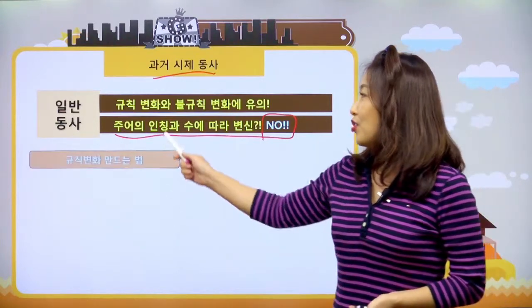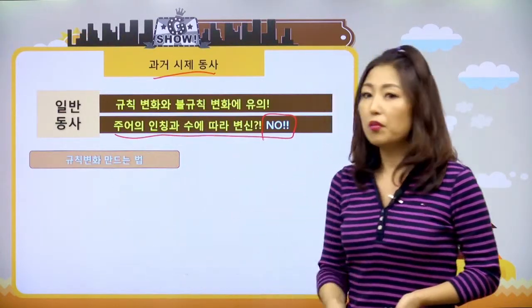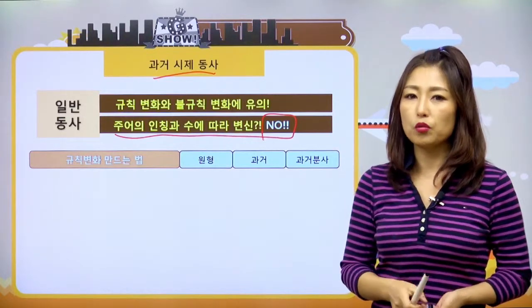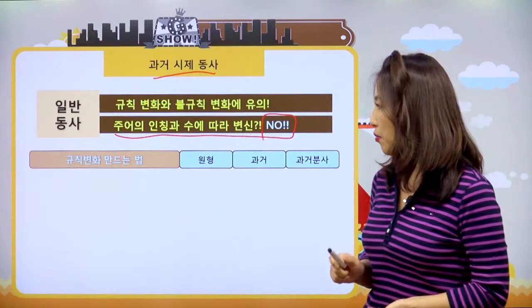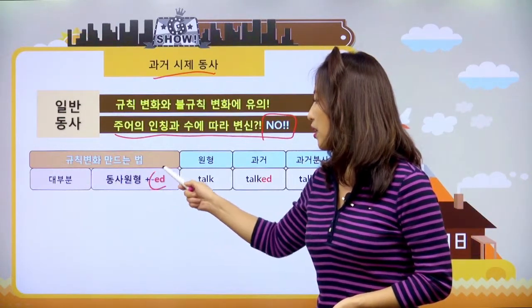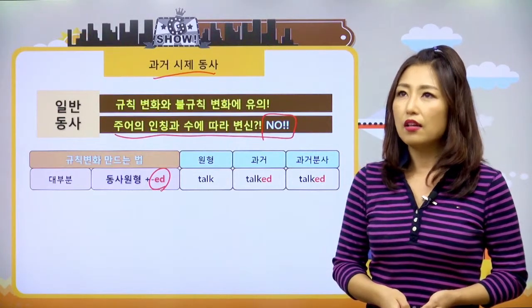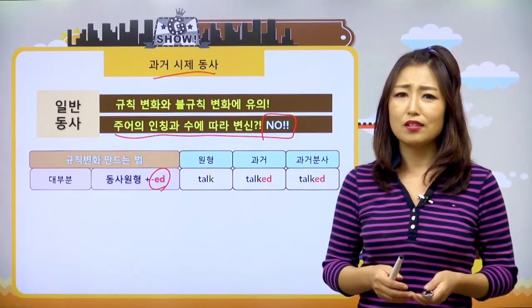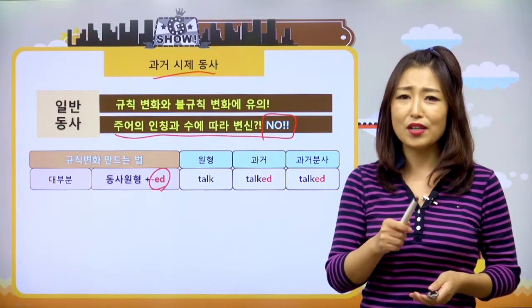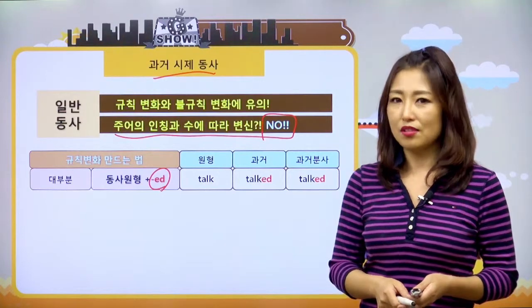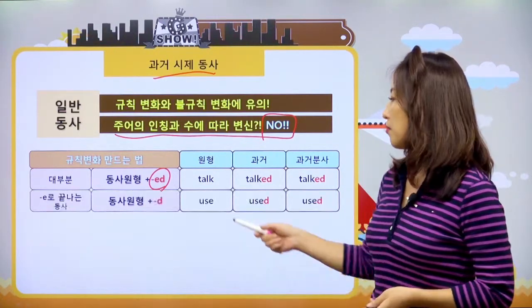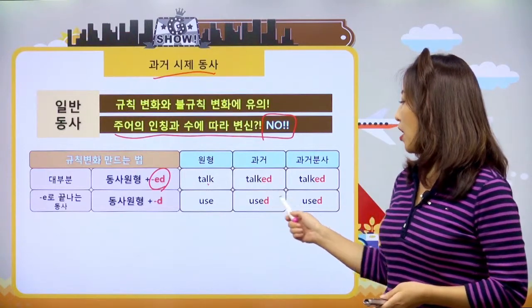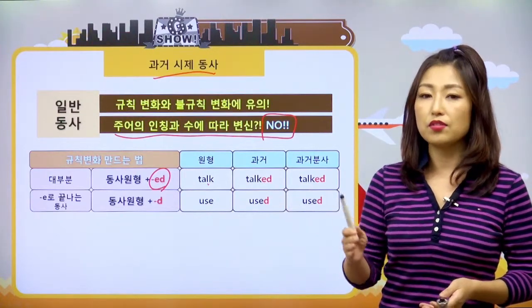규칙 변화를 만드는 법 먼저 볼게요. 원형, 과거, 과거 분사 이렇게 3단 변신을 볼 거예요. 첫 번째, 대부분의 동사에는 그냥 동사 원형에 ED를 붙여요. 형용사에는 ER, EST 붙여서 비교급 최상급 만들고, 동사의 현재 시제는 S나 ES 붙이고 하는 것처럼요. 여기는 과거니까 ED를 붙이는 거예요. 예를 들면, talk, talked, talked. 이렇게 과거와 과거 분사의 형태가 같아요.